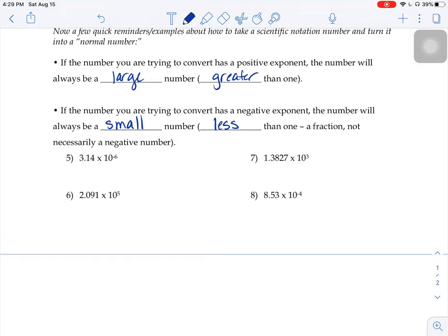So when we say 3.14 × 10⁻⁶, I need to move it 6 spaces to the left. In order to make that happen, I'm going to have to tack on 1, 2, 3, 4, 5 zeros...